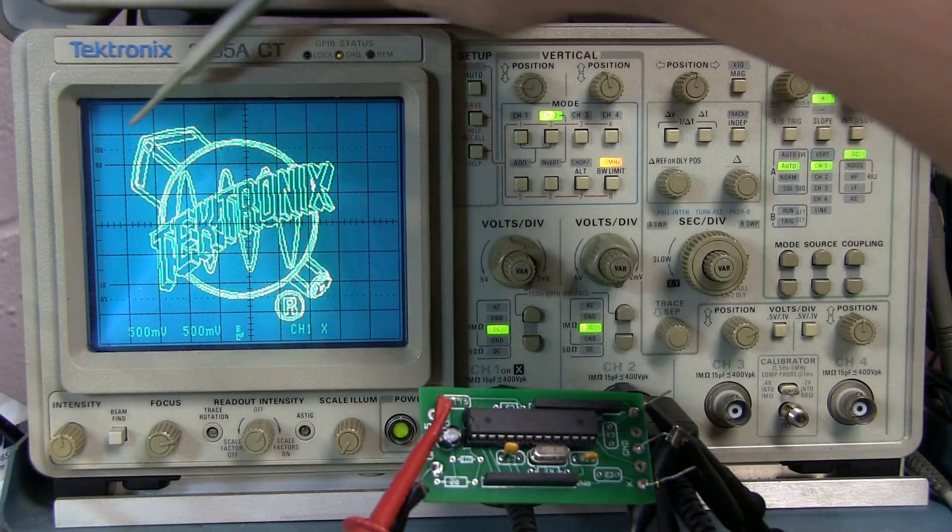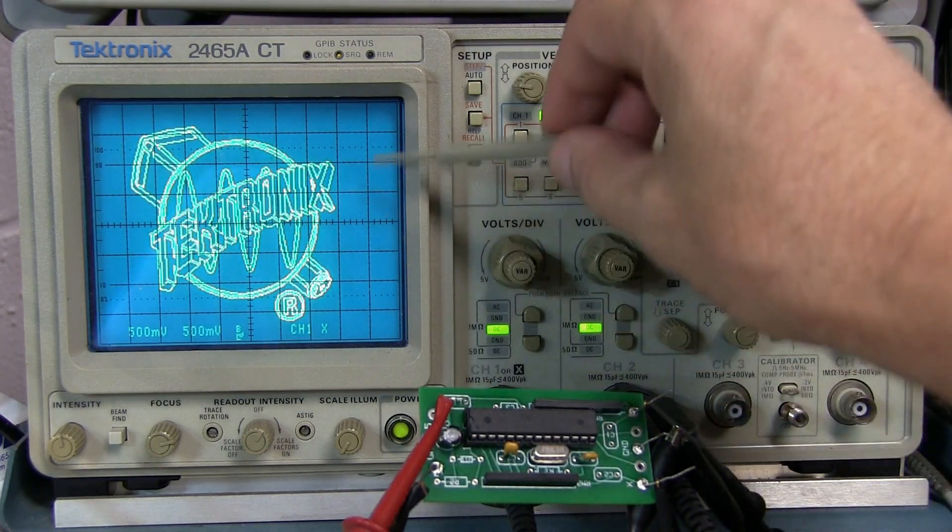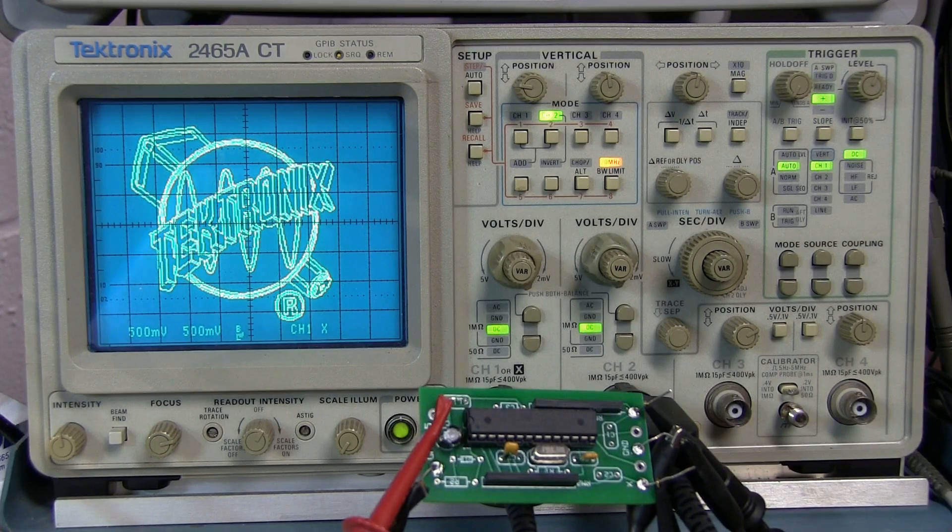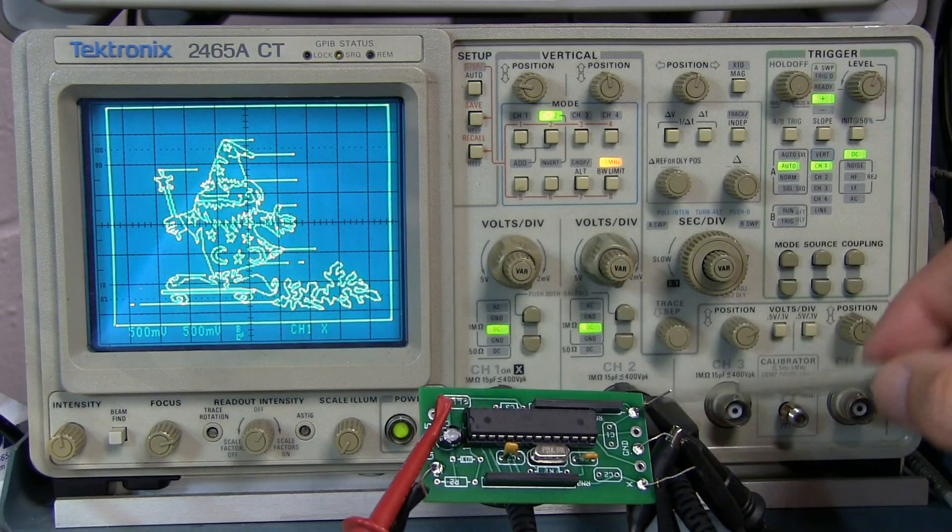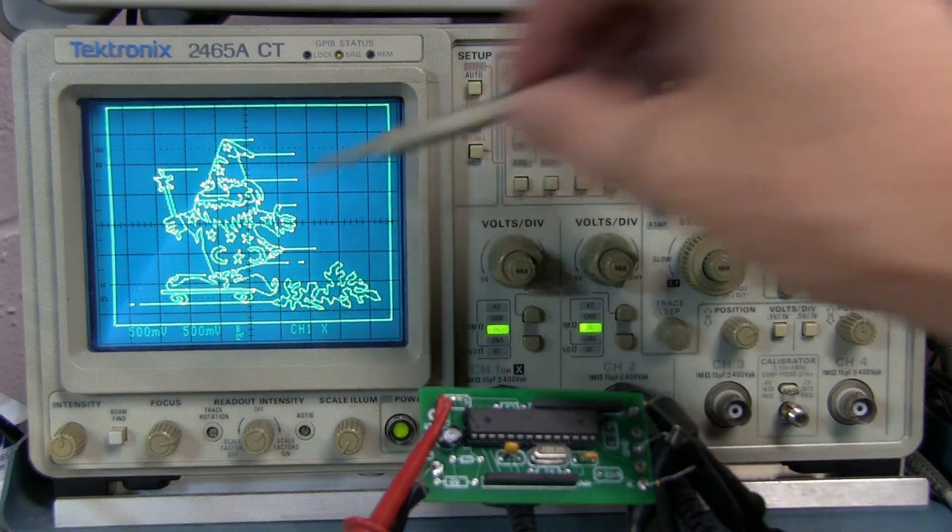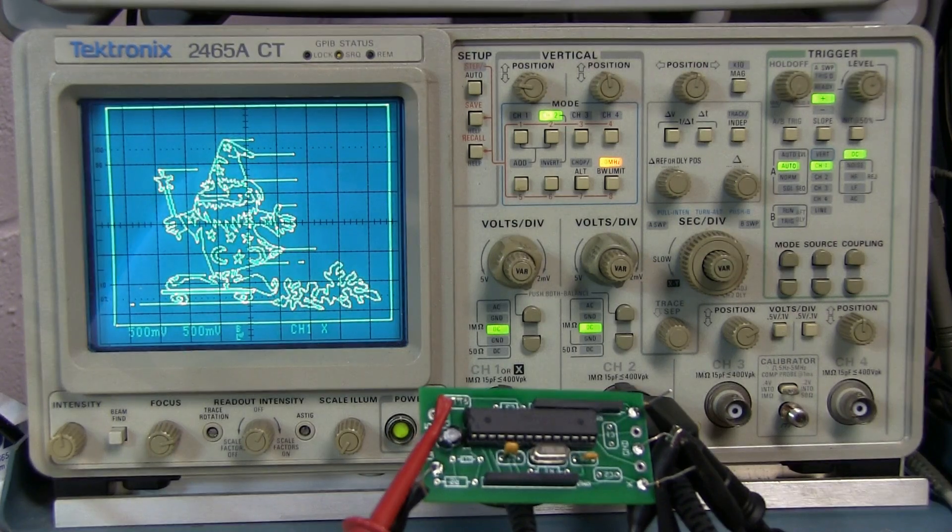In normal scope operation, the horizontal position of the beam is controlled by the time base and the vertical position is controlled by one of the inputs. In XY mode, the horizontal position is controlled by one of the inputs and the vertical controlled by the other input. So essentially we're steering the beam around, kind of like an electronic version of Etch-a-Sketch.